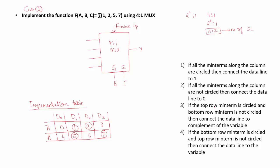Third rule is, if the top row minterm is circled and bottom row minterm is not circled, then connect the data line to the complement of the variable. Fourth rule is, if the bottom row minterm is circled and top row minterm is not circled, then connect the data line to the variable.